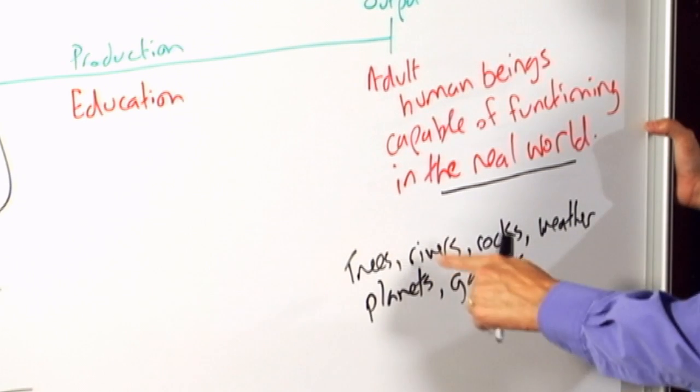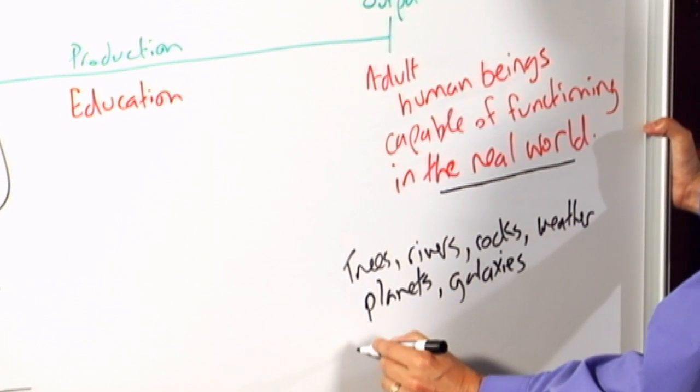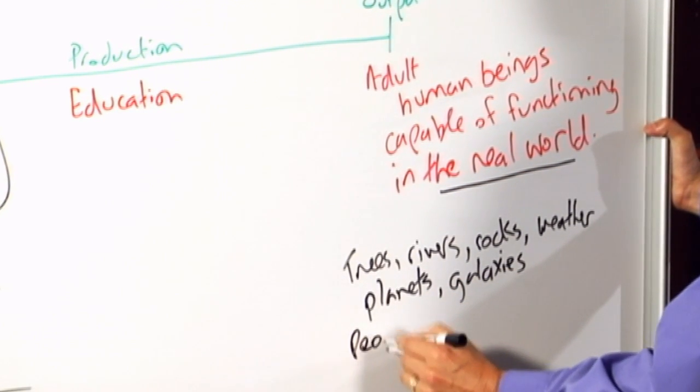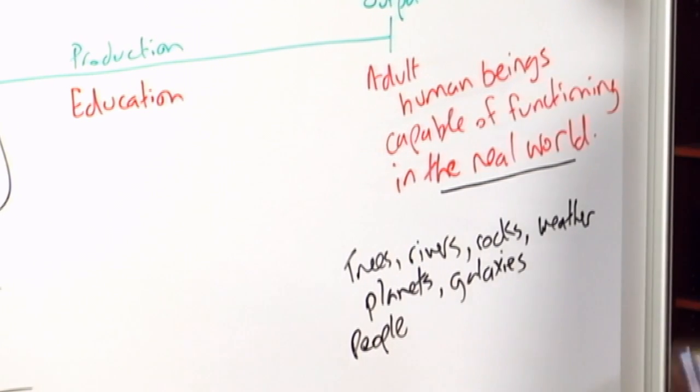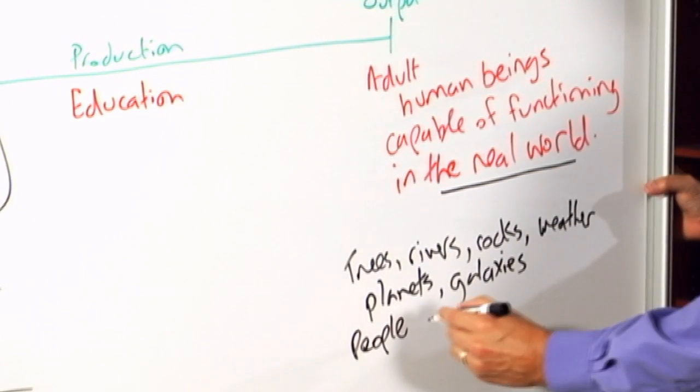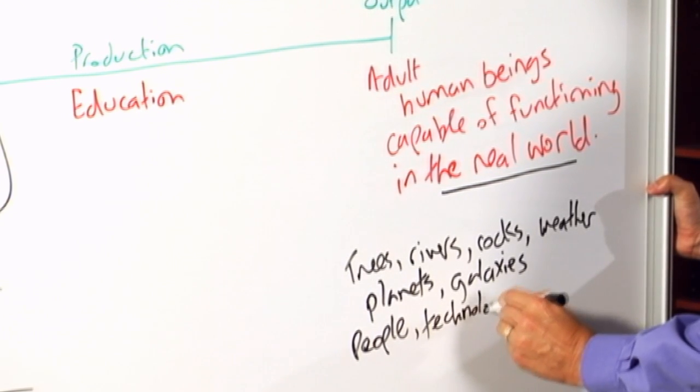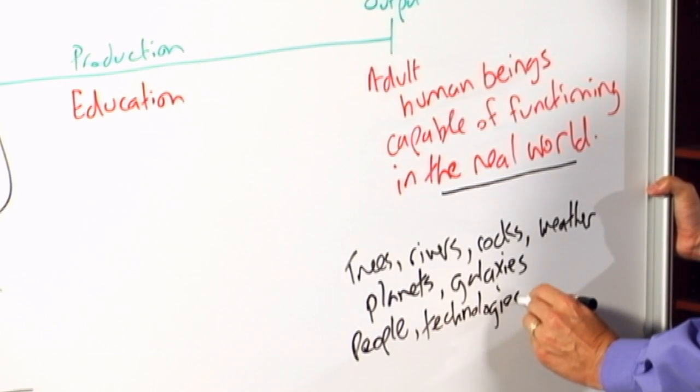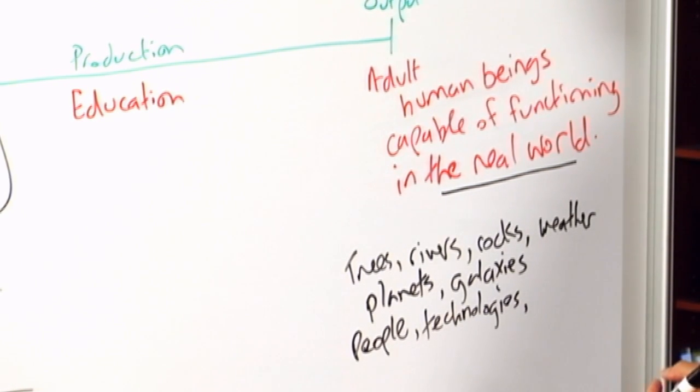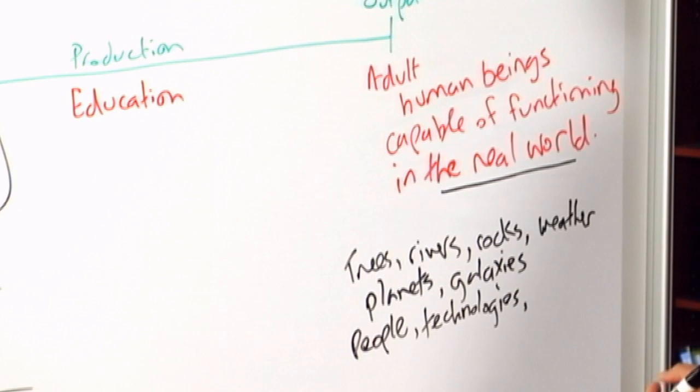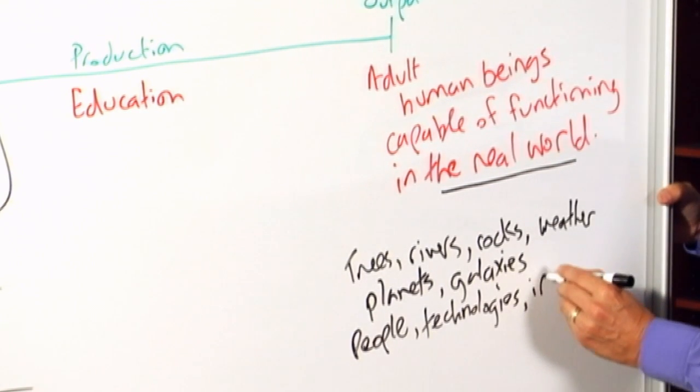We might also notice that in our immediate environment there are other people, besides ourselves, that are part of the real world. They develop various kinds of technologies. So there are refrigerators and automobiles, and when we go forth into the real world we need to know about those things. Computers, there are various kinds of institutions.